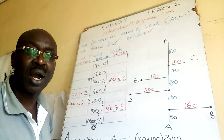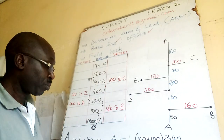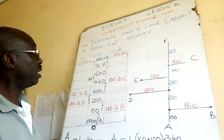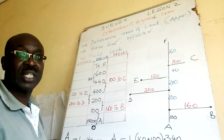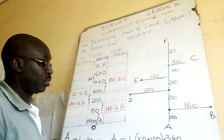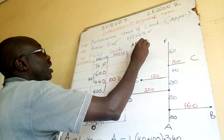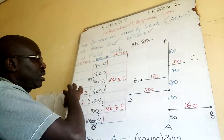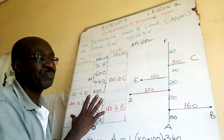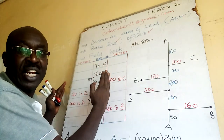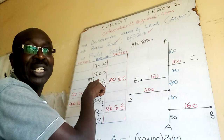This field book we cannot change — we are given that the baseline AF is 600 meters. So AF is equal to 600 meters. Let us take all these dimensions to be in meters, as it is easier to explain.